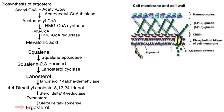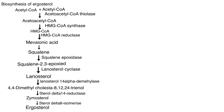The first category is polyene antibiotics. Polyene antibiotics bind with ergosterol and form pores that cause rapid leakage of monovalent ions like potassium, sodium, hydrogen, and chloride, resulting in subsequent fungal cell death.